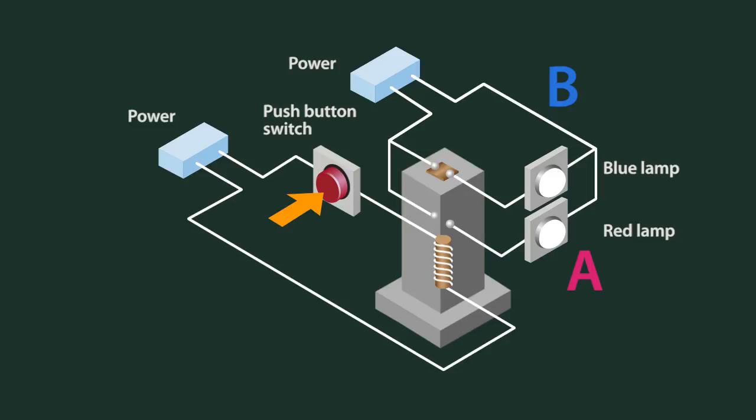When the power is turned on, electricity will run through Route B, and the blue light will turn on.